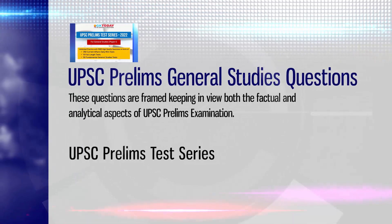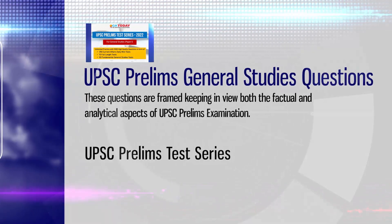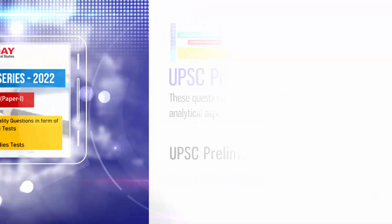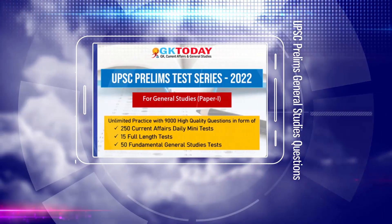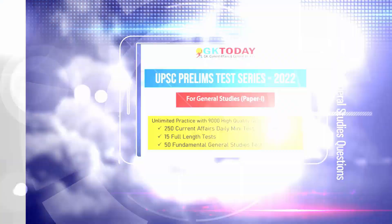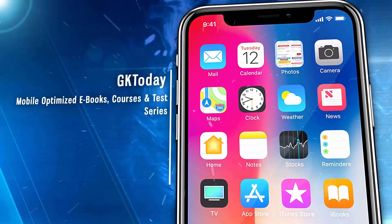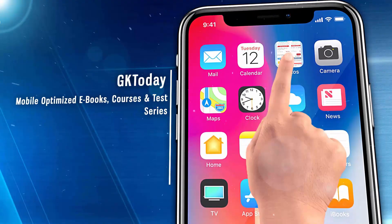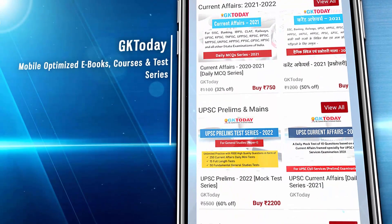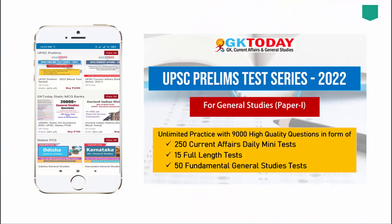These questions are framed keeping in view both the factual as well as analytical aspects of UPSC Prelims Exam. These questions are part of GK Today's UPSC Prelims Test Series available in the GK Today Android app. The test series for 2022 Prelims comprises a total of 7500 questions — 2500 on current general studies and 5000 on static general studies.